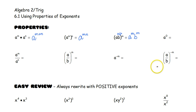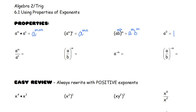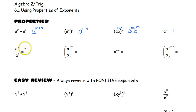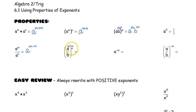Next, we have a raised to the zero power. Anything raised to the zero power is just one. We've got a to the m divided by a to the n — same base again. When we multiplied bases we added the exponents, so when we divide bases we are going to subtract the exponents, giving us m minus n. When we have a fraction raised to a power, just like with a quantity, you are going to distribute that in — it goes to everything on top and everything on the bottom. So that's a to the m over b to the m.